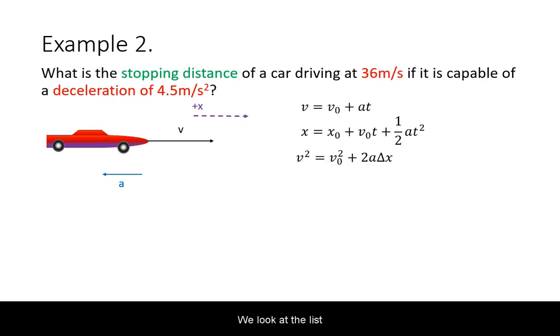We look at the list of kinematic equations for constant acceleration and highlight which ones include the unknown variable. We narrowed down our selection based on what is given in the problem.